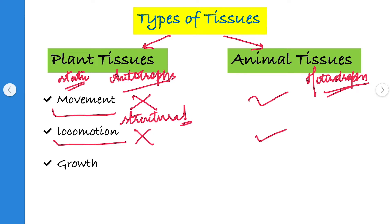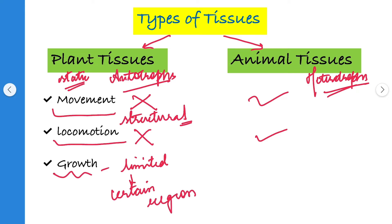In plant tissues, the growth is limited to certain regions — it is not that the plant will grow in all tissues; it will only happen in certain regions. In animal tissues, the growth is uniform.